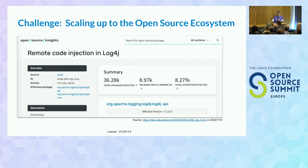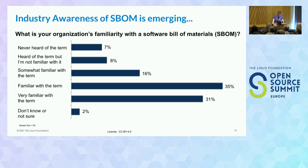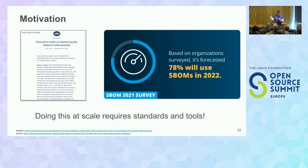From the survey, asking how aware people were — the equivalent of the hand show at the start — most people had heard the term: very familiar, rather familiar, or somewhat. One challenge is people have assumptions of what the term means because they think they know, but there are some subtleties. The executive order provided a lot of motivation because companies want to make money. 78% said they'd be using SBOMs this year. To do this we require use of standards so that we can interoperate, with various tools working with those standards.